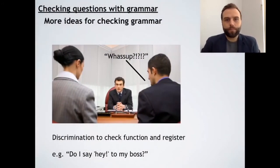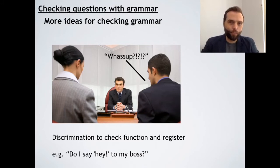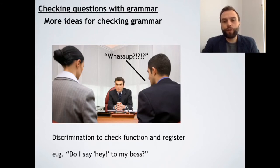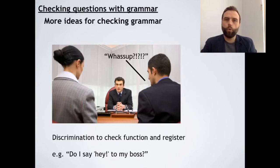Some more ideas for checking grammar. Have a look at this picture — in a business meeting, the boss is talking to two people and one person says 'What's up?' Of course, that's not the right register. This is a formal situation, so informal language is not suitable. Using discrimination to check function or register — using pictures and examples like this to check. Register and using the correct kind of sentences is quite important in English, not quite as important as in Korean where you have informal and formal speech levels, but we can also use discrimination of different situations to work with register.